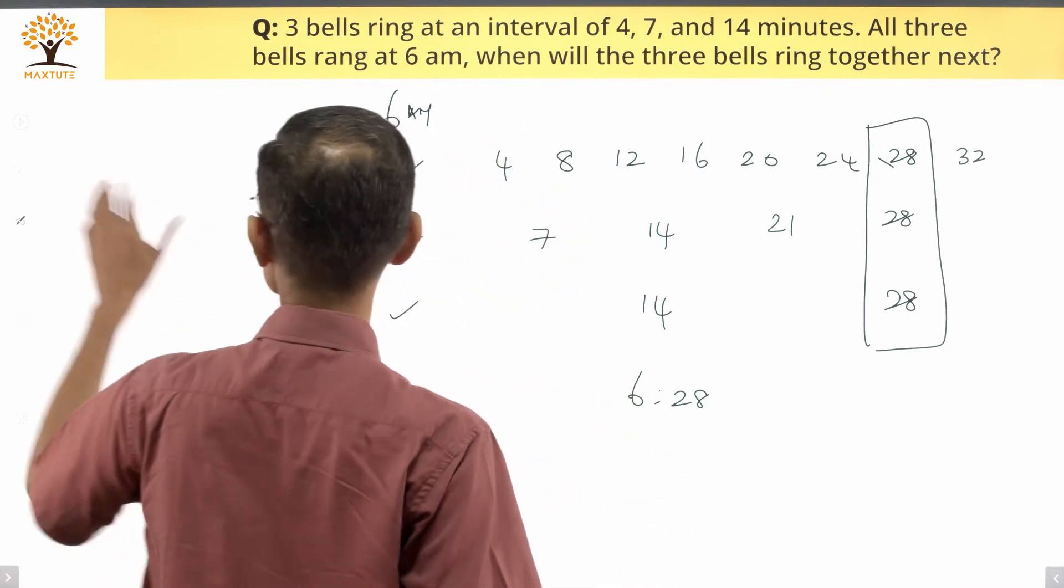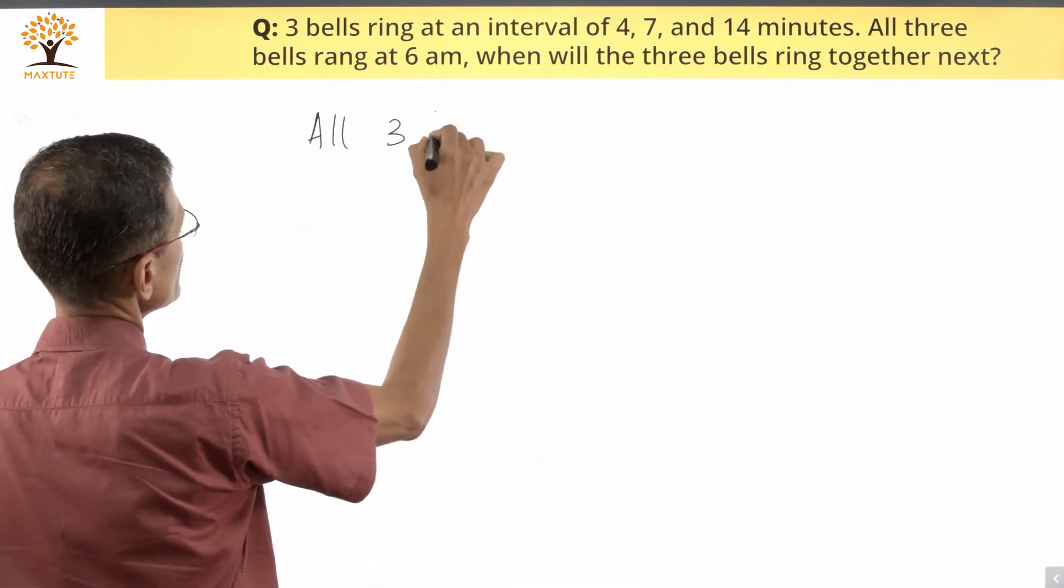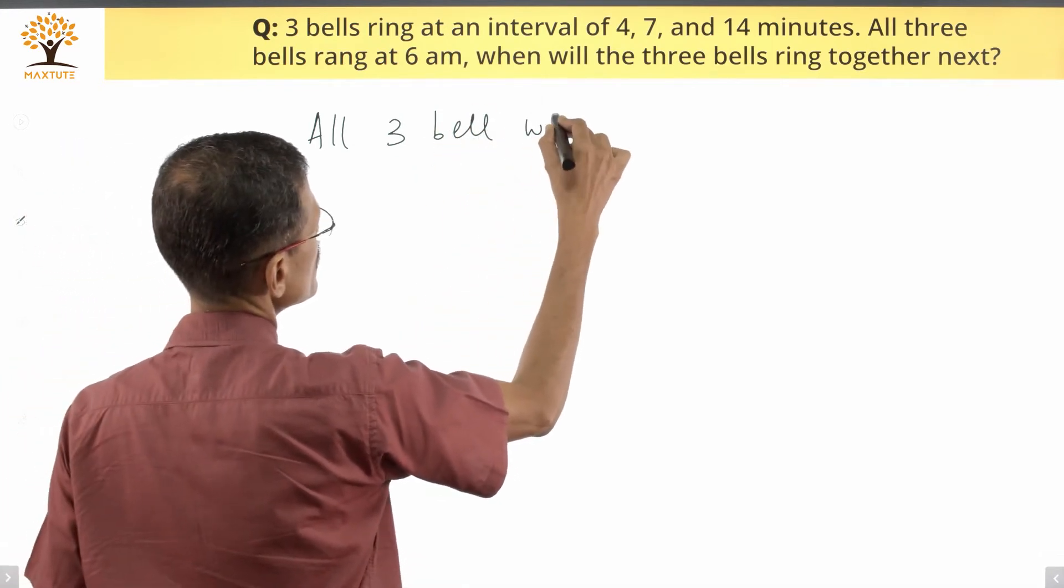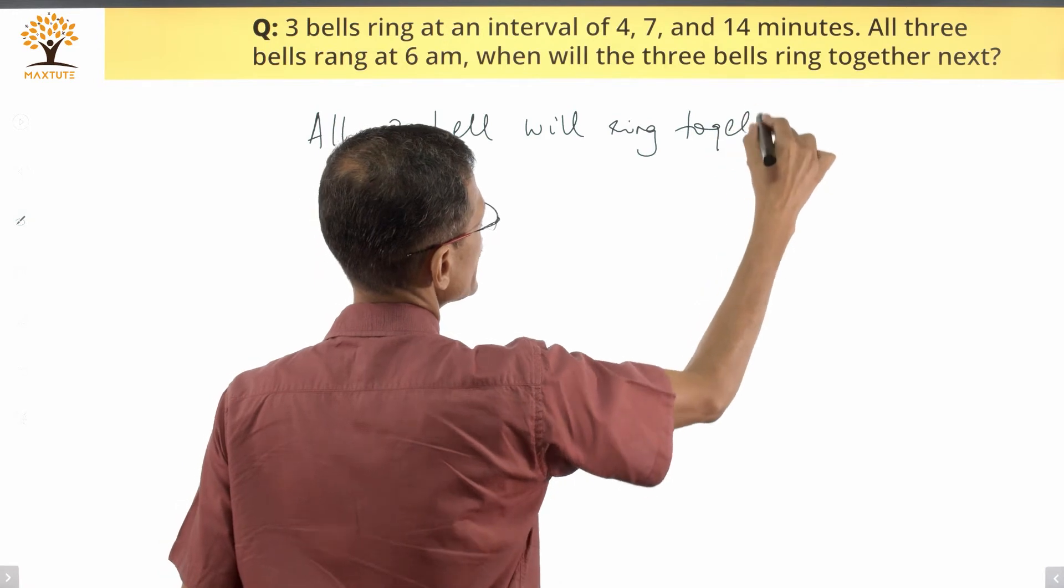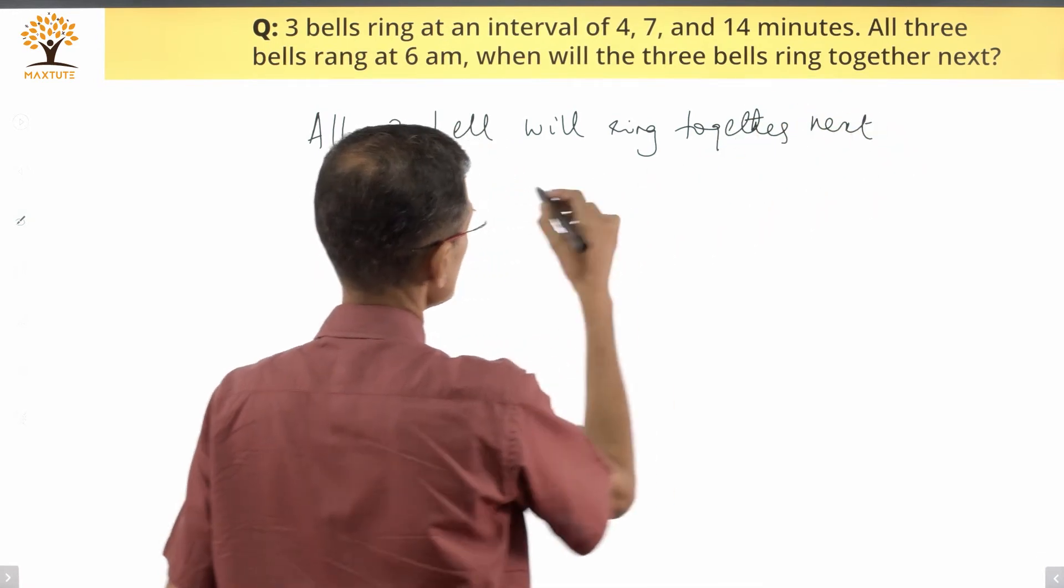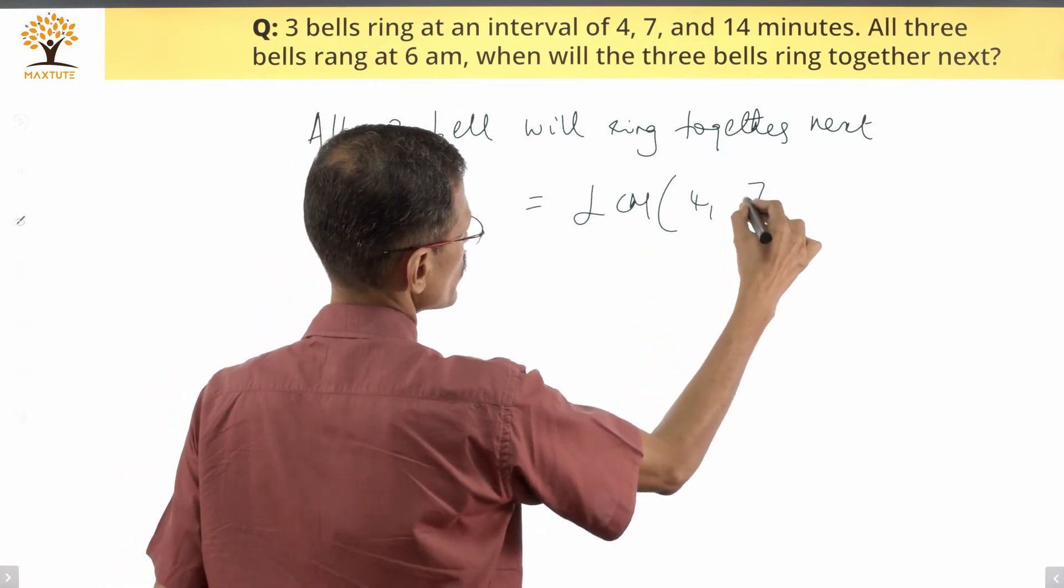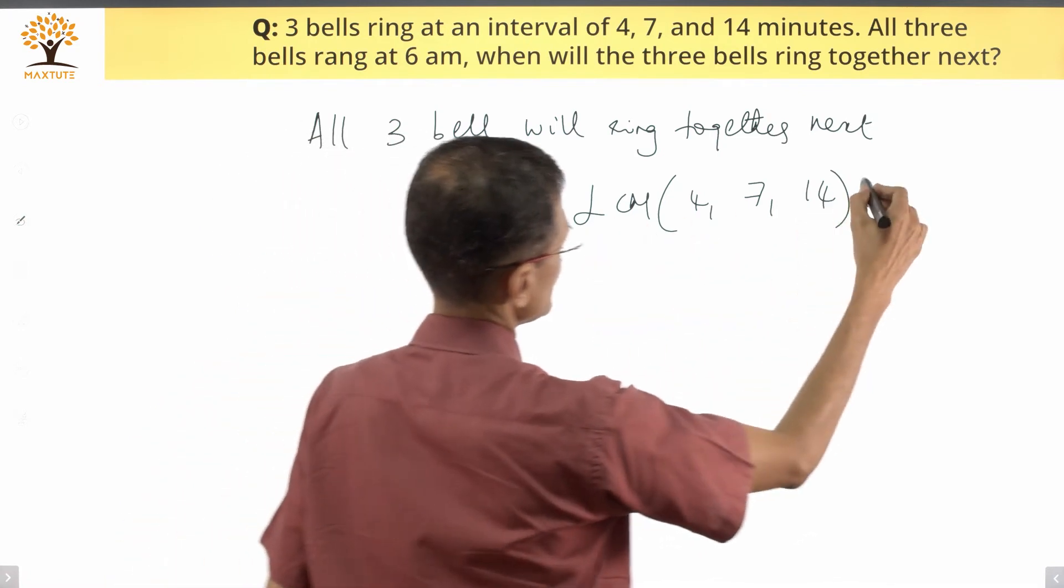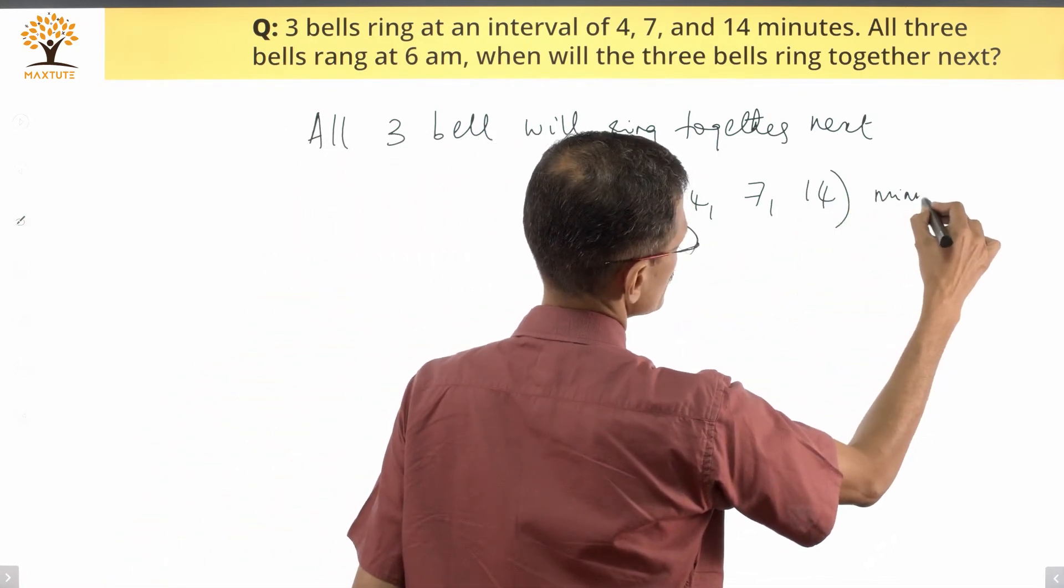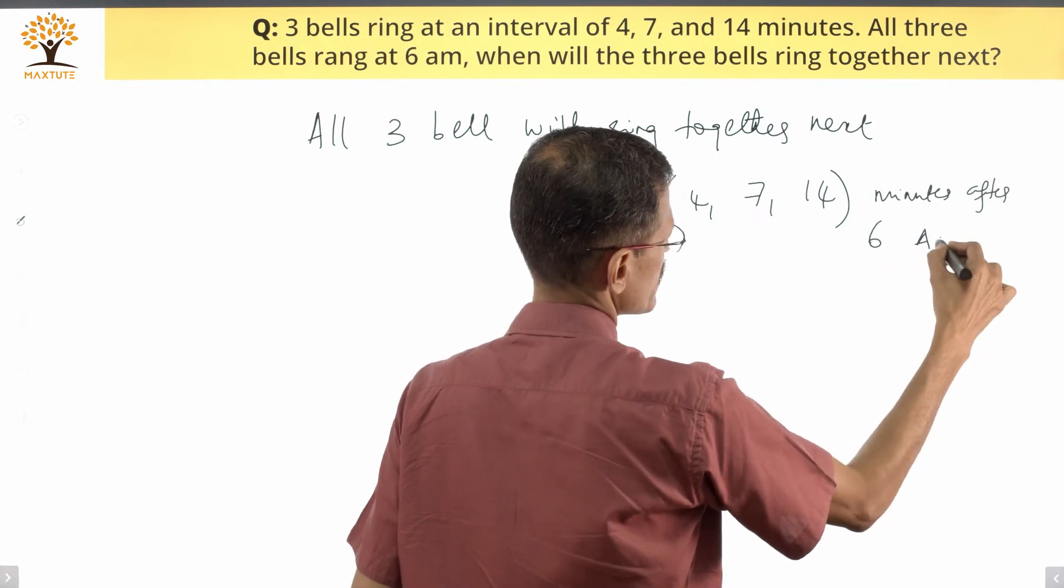Steps are basically this. We'll say all three bells will ring together next when that is going to be equal to the LCM of these three numbers 4, 7, and 14, minutes from 6 o'clock. LCM of this, minutes after 6 am. This is step number one.